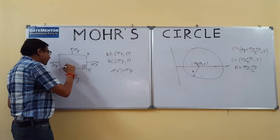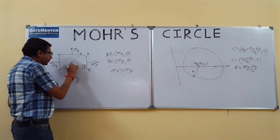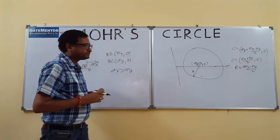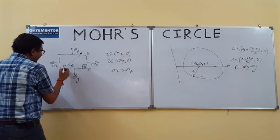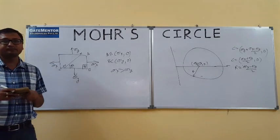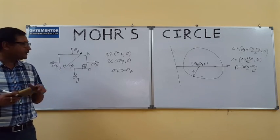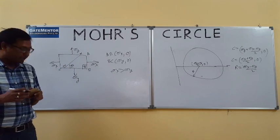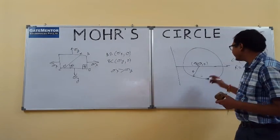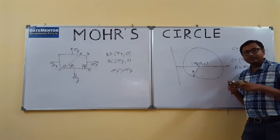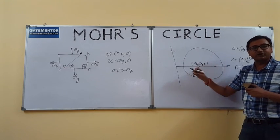Now I have to find out the normal and shear stress on plane MN. Remember, every point on the Mohr's circle represents the stress condition of a particular plane. So we need to find the point on the Mohr's circle that represents plane MN.